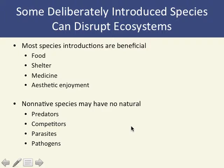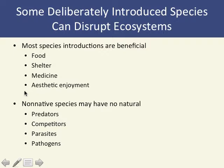The 'I' in HIPCO stands for invasive species. These are often introduced deliberately — for food, shelter, medicine, or aesthetic enjoyment. Examples include aquarium fish like the Burmese python in Florida and the lionfish in the Caribbean, which were likely released into the wild where they reproduced without natural predators or competition.